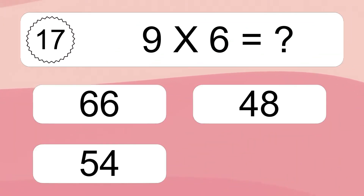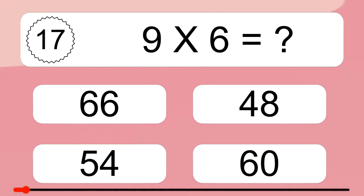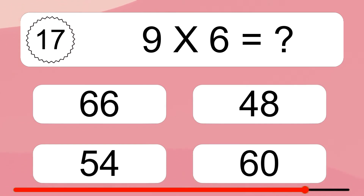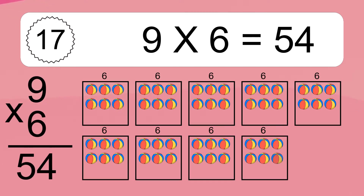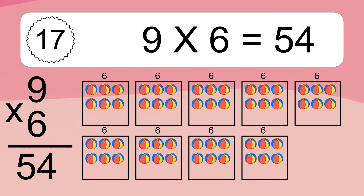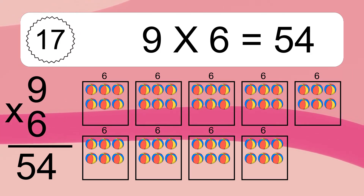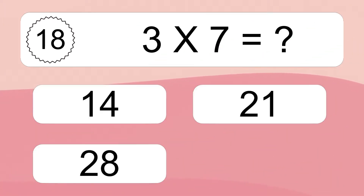Nine times six equals what? Nine times six equals 54. We have nine boxes, and each box has six colorful balls inside. If you count all the balls in all the boxes together, you will have nine times six balls. This equals 54 balls.